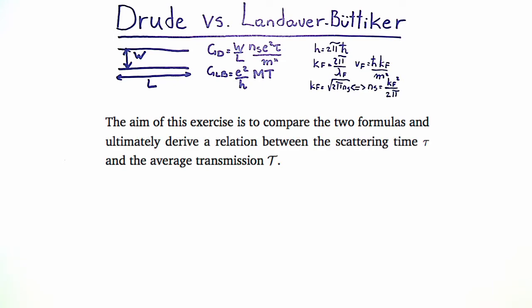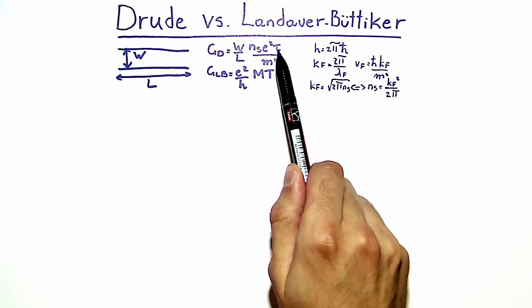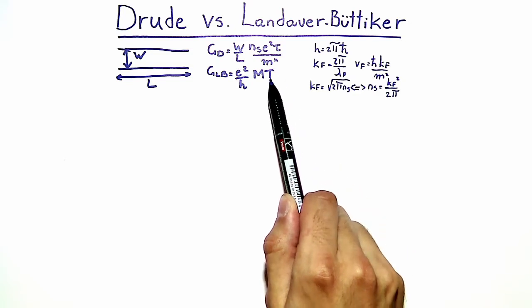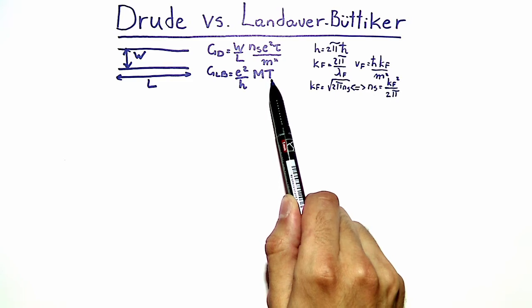What we want to do in this exercise is to compare these two expressions for the two conductances and derive a relation between the scattering time tau and the average transmission t. So we are looking for a way to connect tau, which is the classical scattering time, with t, which is a quantum mechanical quantity.